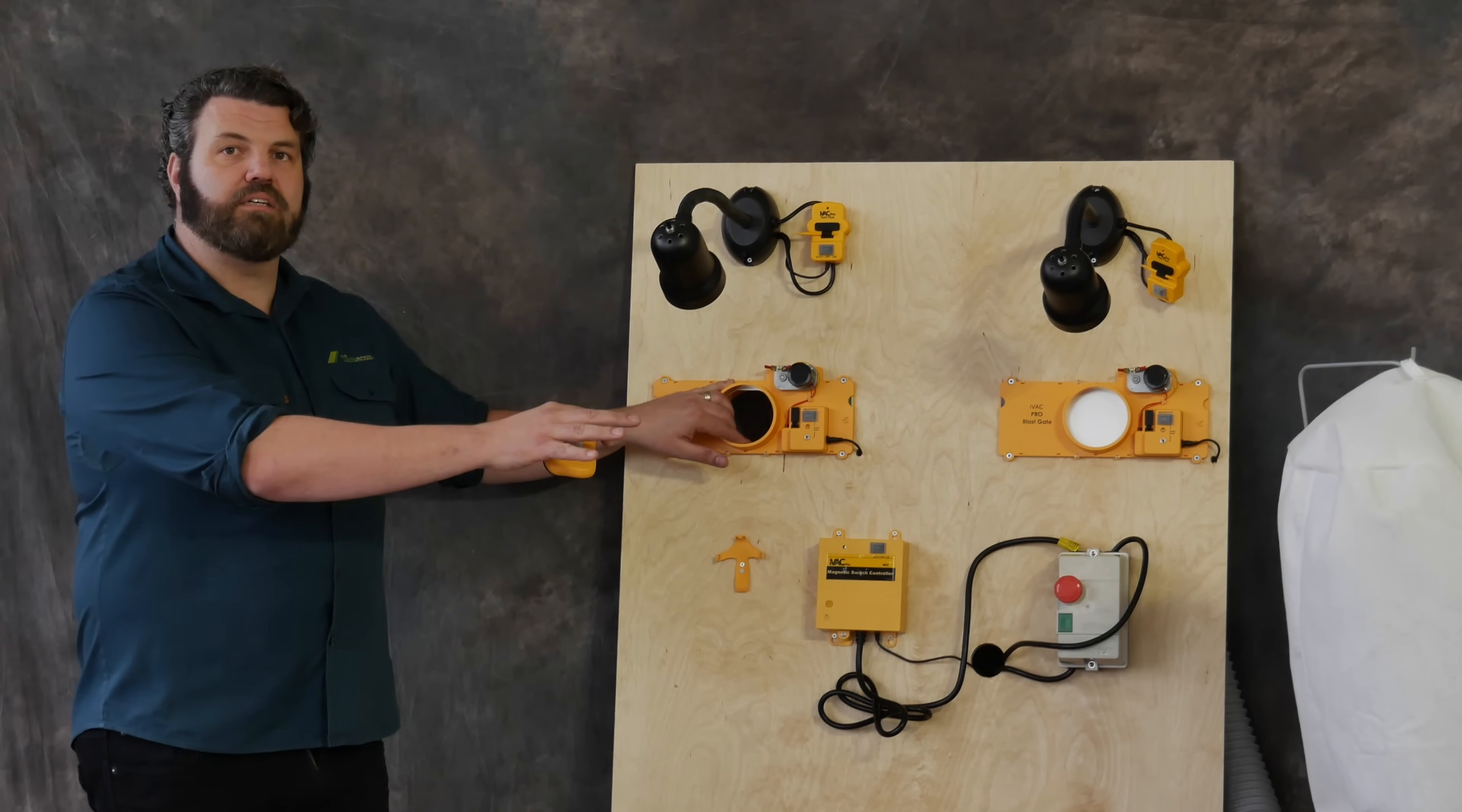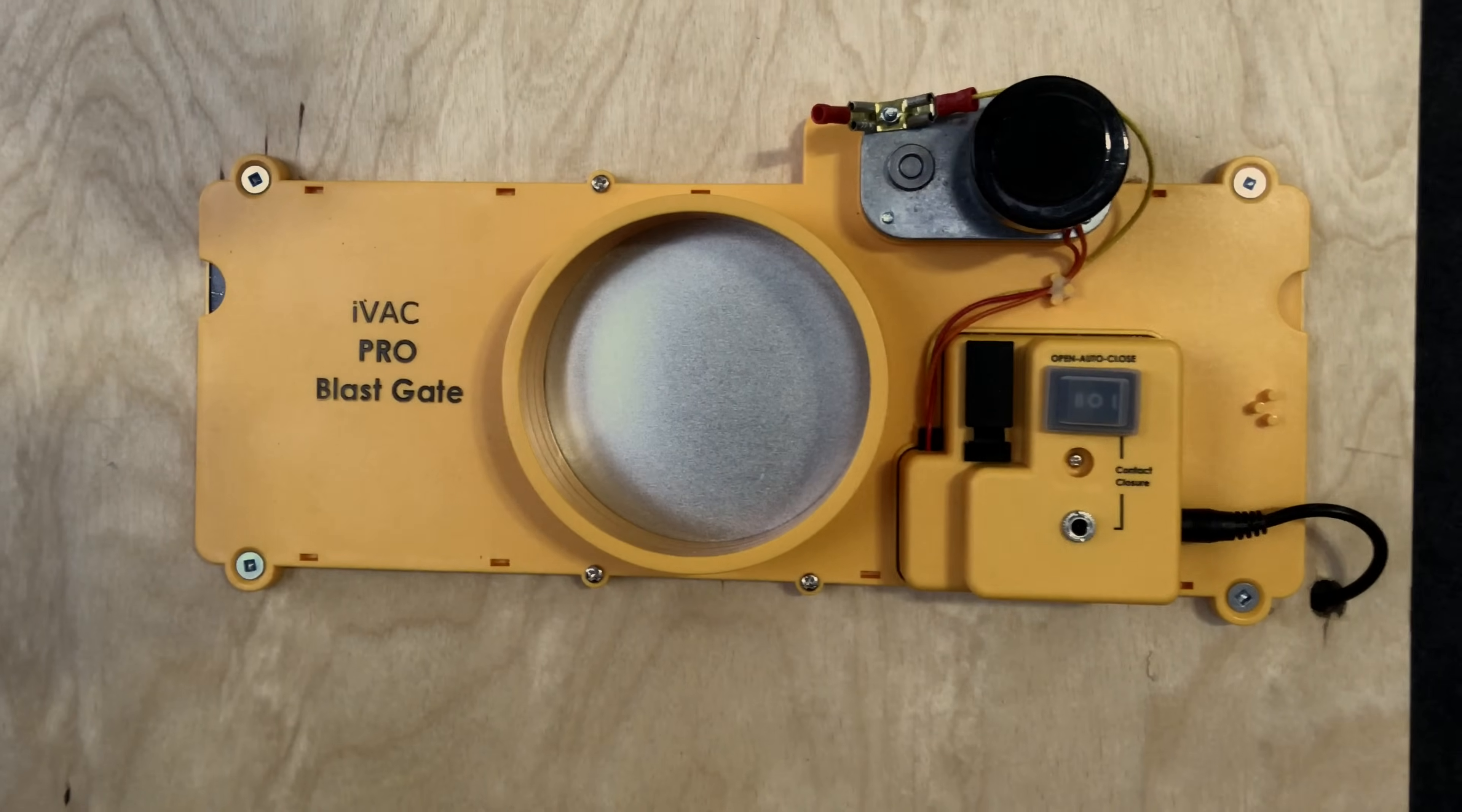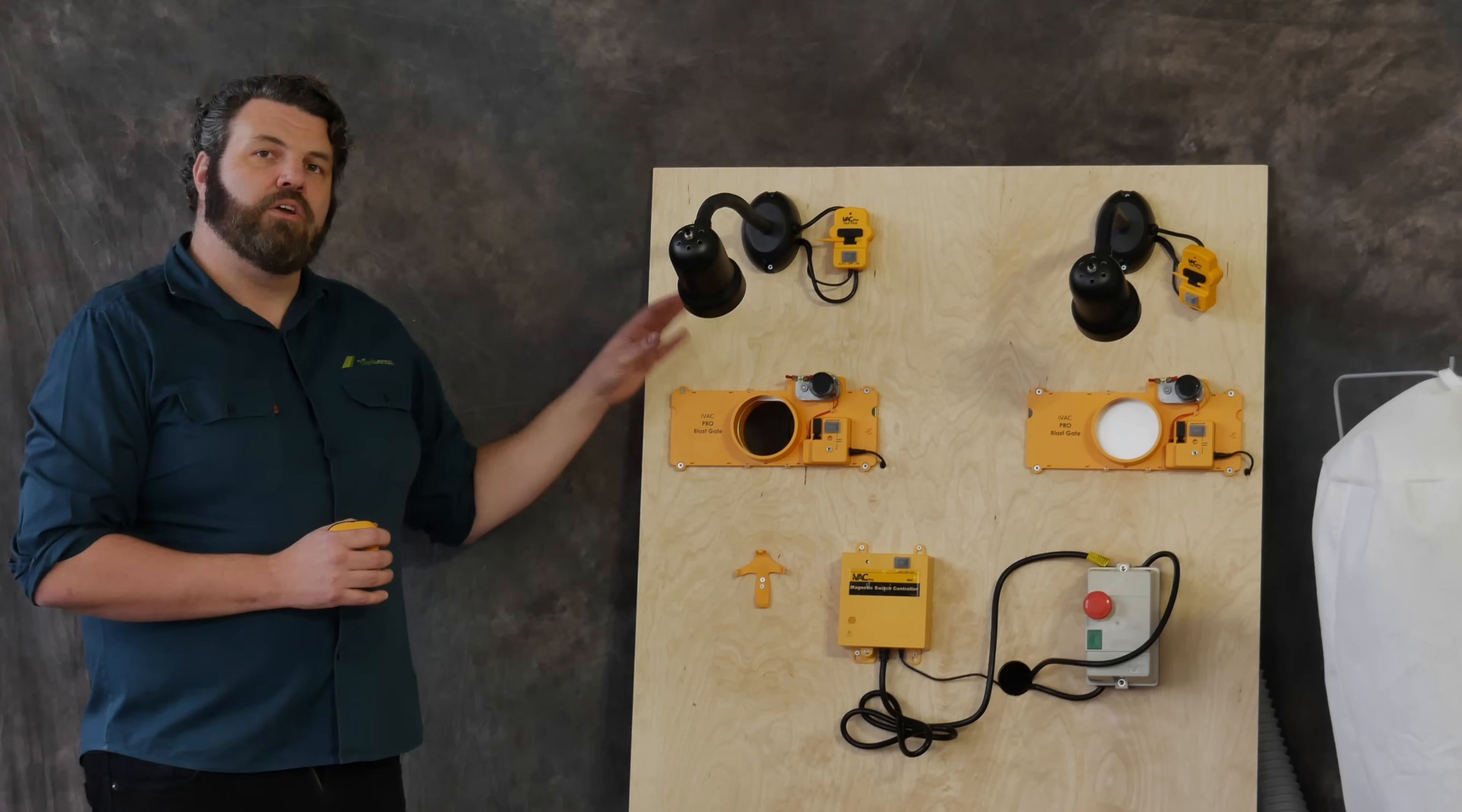If any of the other blast gates open up, this one will automatically close because the system is smart enough to know that there's a blast gate open and there's air flowing to your dust extractor. Now in this particular demonstration you'll have noticed that these open and close reasonably quickly.